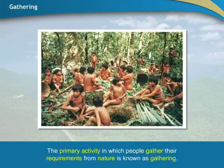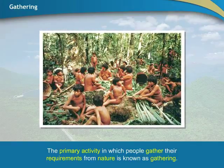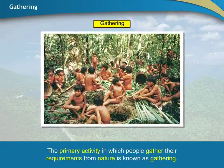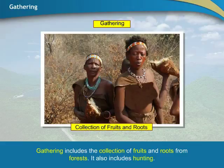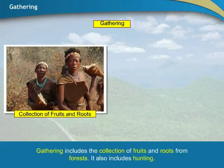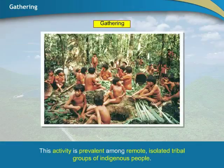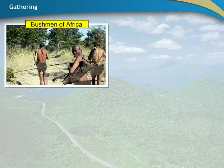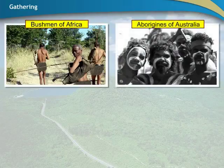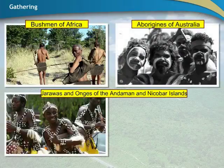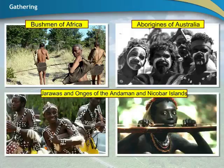The primary activity in which people gather their requirements from nature is known as gathering. Gathering includes the collection of fruits and roots from forests, and it also includes hunting. This activity is prevalent among remote, isolated tribal groups of indigenous people — for example, the Bushmen of Africa, the Aborigines of Australia, and the Jarawas and Onge of the Andaman and Nicobar Islands.